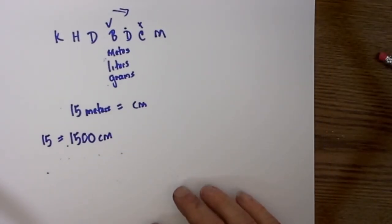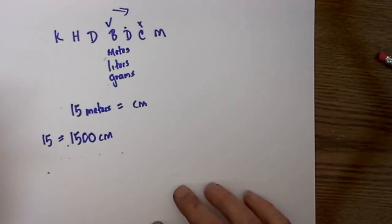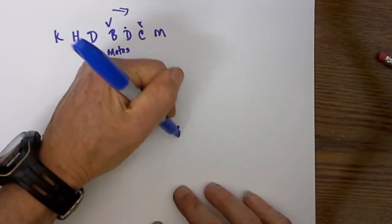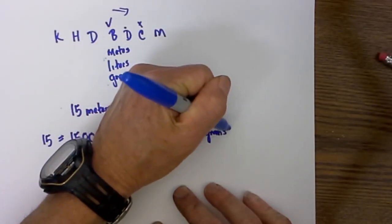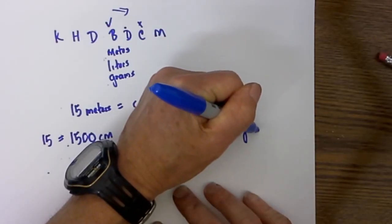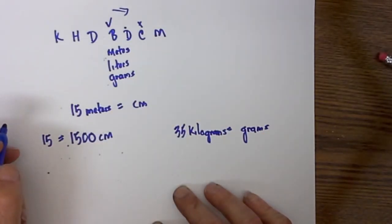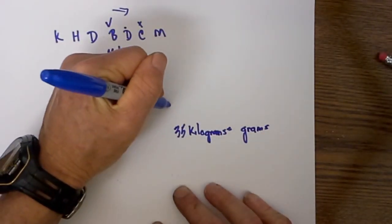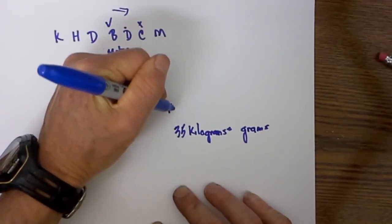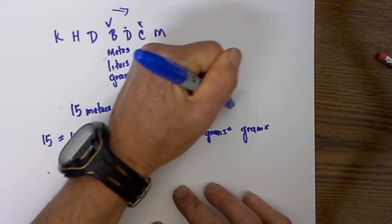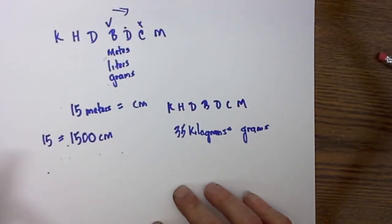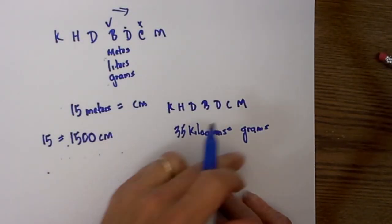Let's go ahead and jump into another one. This time we see 35 kilograms equals how many grams? We know because it is in grams it is measuring mass. I am going to write this again, King Henry died by drinking chocolate milk. You do not need to write this every time but I thought I would just to show you.